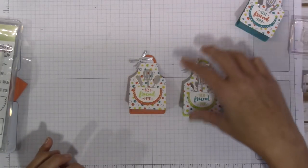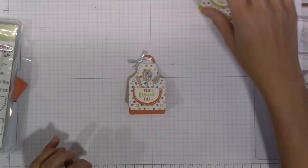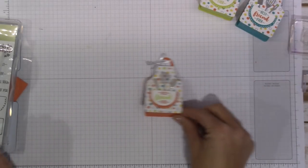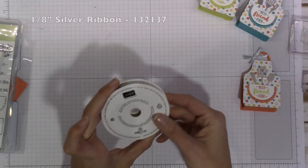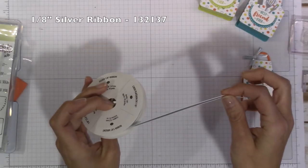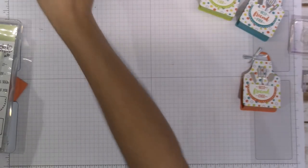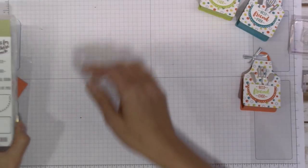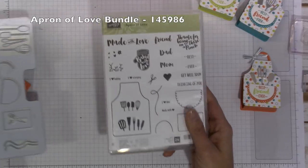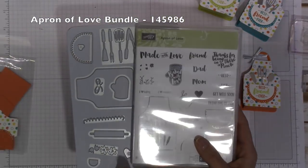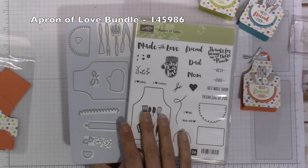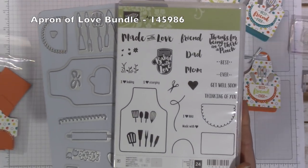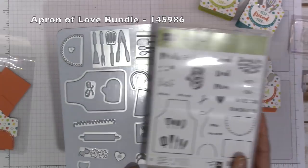So let's get started with the supplies and I will show you how to put this together. It will take absolutely no time at all. The one we are going to be making is with the Calypso Coral today. So I used the silver one-eighth inch ribbon, Calypso Coral and Lemon Lime Twist ink pads, the Apron of Love and Apron Builder Framelits. So this is a bundle that is featured in the Occasions catalog and I absolutely love it.